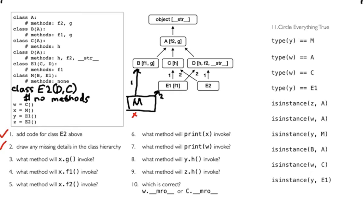So the first one. I haven't shown you the rules yet, but I want you to at least make a prediction — what matches your intuition? What method gets called when I say x.G? Am I calling the A version of G or the B version of G? The answer is that I'm going to call the B version of G. The rule is that we want to prefer closer.